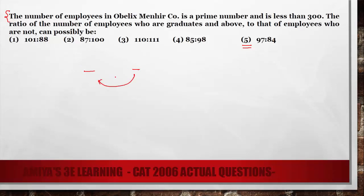Whenever we have to find the ratio of two mutually exclusive sets, we can find the summation as the sum of these two ratios or their multiples. What I am saying is, if graduate to non-graduate is 108 to 288...